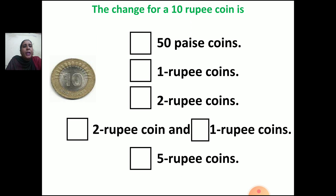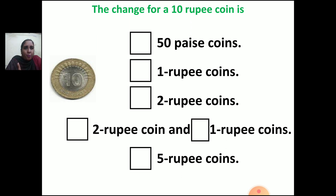Now let us see the change for a 10 rupee coin. If you want to take change for 10 rupees using only 50 paise coins, how many 50 paise coins will you need? Think: 2 fifty-paise coins make 1 rupee, and you want 10 rupees, so you will take 20 fifty-paise coins.